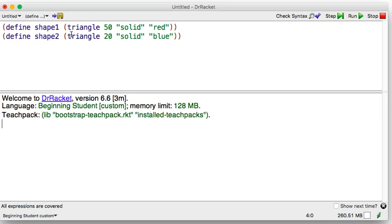That loaded my definitions. Now let's call shape2. Yep, there's a smaller blue triangle.